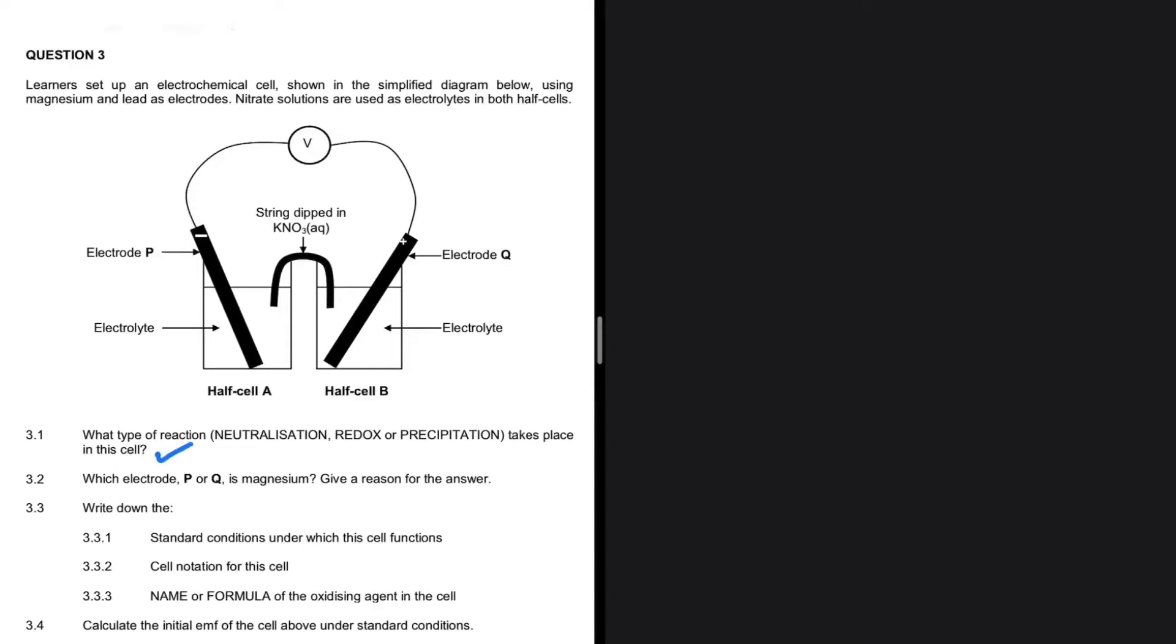What type of reaction takes place in this cell? Well, it is a galvanic cell, so the reaction taking place is a redox. Why are we saying it is a redox? That is because there is a transfer of electrons.